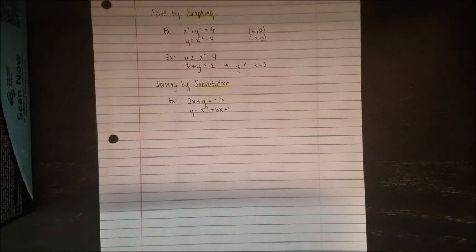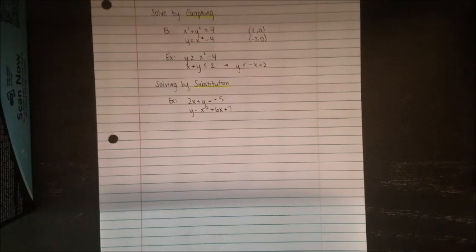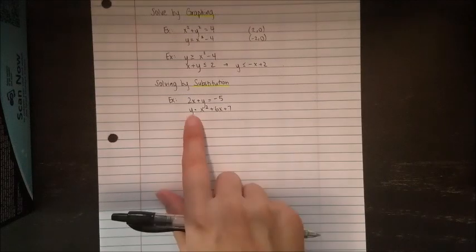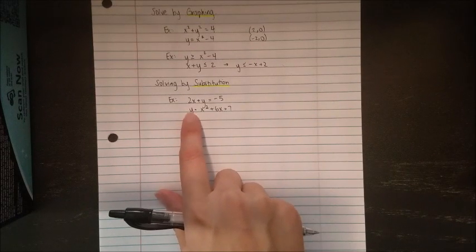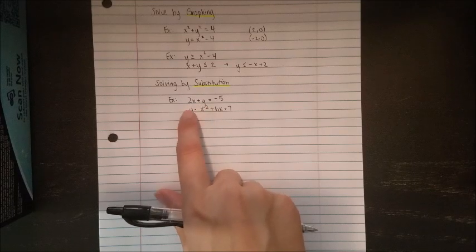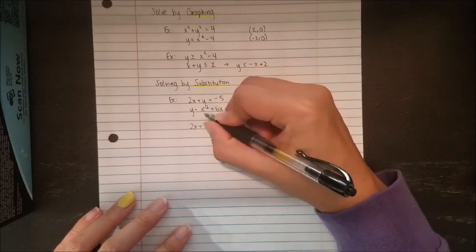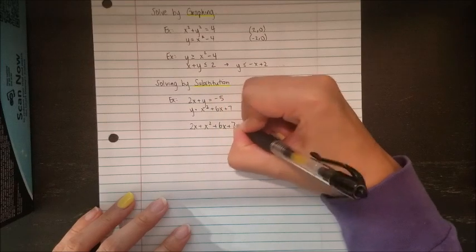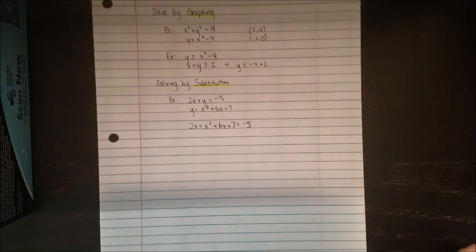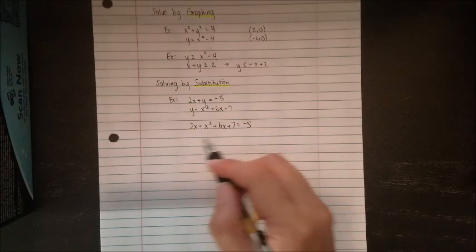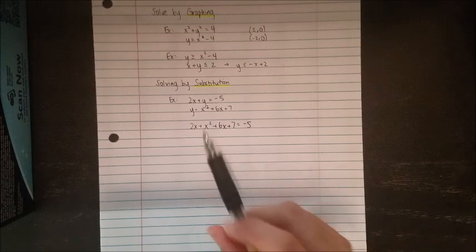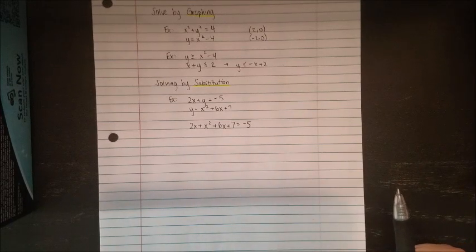Next, solving by substitution — that's where we plug stuff back in. Our goal is to get one of the x's or y's by itself. This equation already has y by itself, so it's easy to plug into the other equation. Substitute this y in for the y in the first equation. Once that's done, I have just one equation with just x's in it — I can solve for x. I do have an x squared, so I'll probably need to factor or use the quadratic formula.